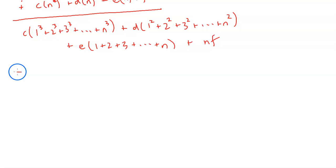And then from here we just remember what the definitions of those summations are. So this is c times the sum from k equals 1 to n of k cubed plus d times the sum from k equals 1 to n of k squared